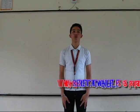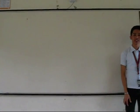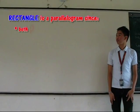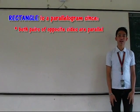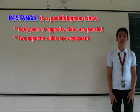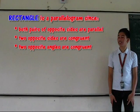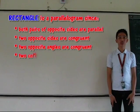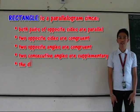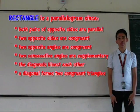So let's get to know why Rectangle is a Parallelogram. As defined, a Rectangle is a Parallelogram since both pairs of opposite sides are parallel, two opposite sides are congruent, two opposite angles are congruent, two consecutive angles are supplementary, the diagonals bisect each other, and a diagonal forms two congruent triangles.